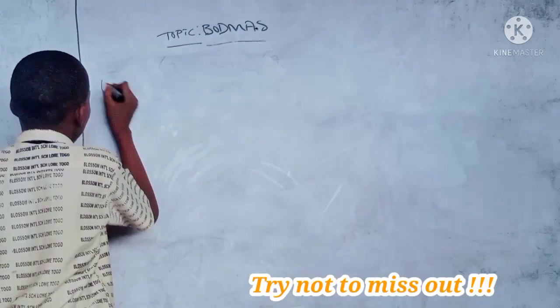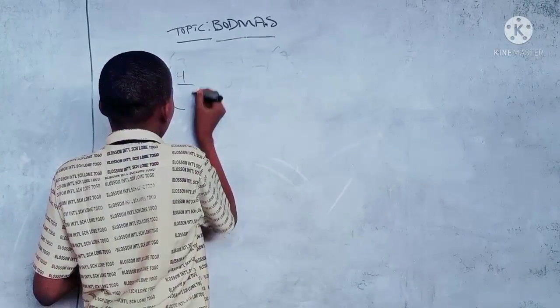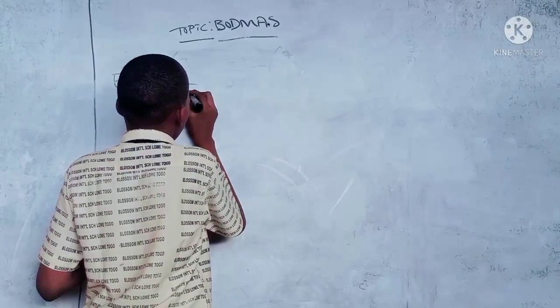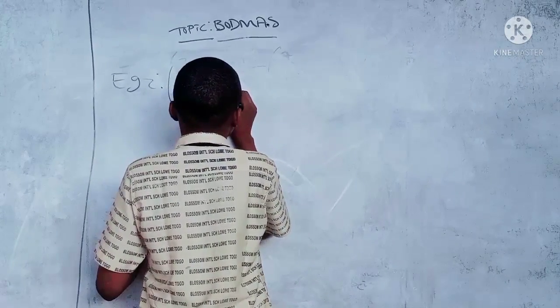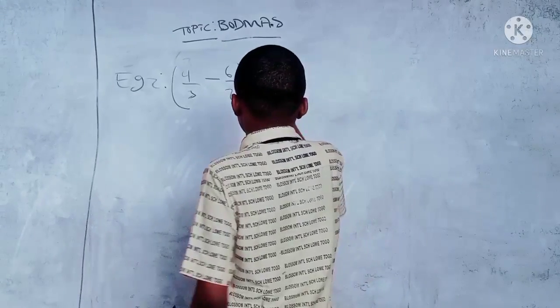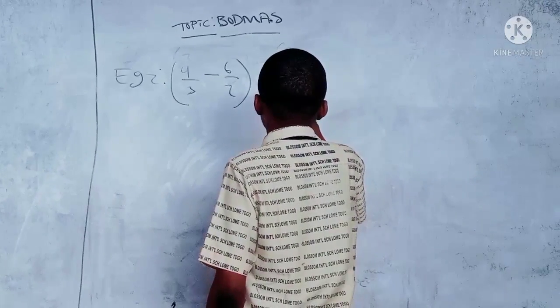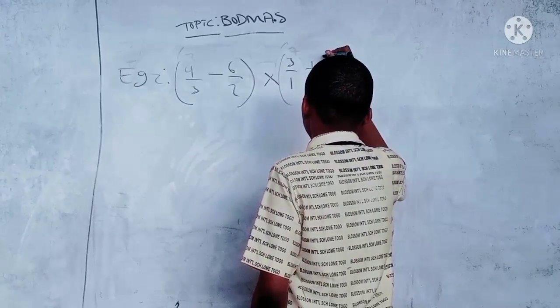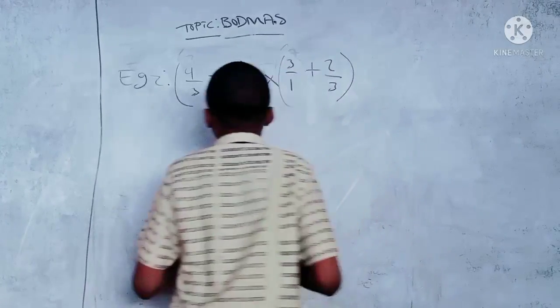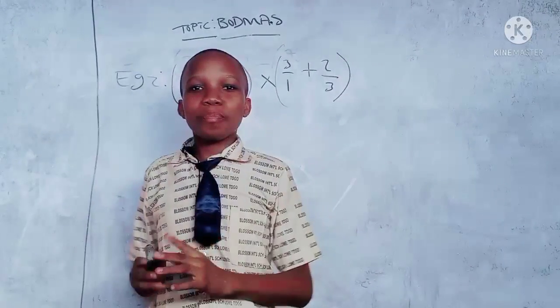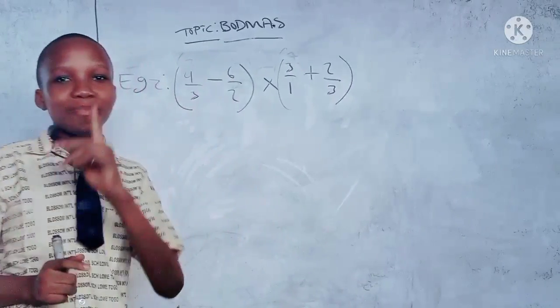This is example two: four over three minus six over two, close bracket, times, open bracket, three over one plus two over three, close brackets. I'm giving you two minutes to solve this question. Pause this video and solve it, then come back for the correct answer.